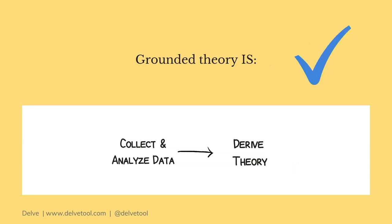Instead, with grounded theory, you first collect and analyze data, and then derive theory from the data itself. So you might go out and collect data, interview children and parents, and from the data, you will derive your theory.